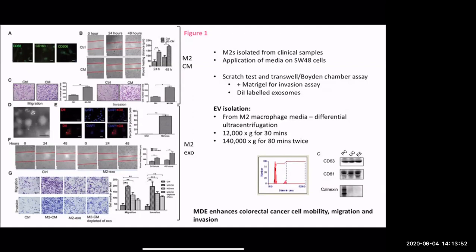Their first conclusion was that macrophage-derived exosomes enhanced colorectal cancer cell mobility, migration, and invasion. For me, something extra I'd want to see is staining the actin on the cell cytoskeleton to see if there's actually a change making it more polarised toward a metastatic phenotype. That's all for figure one - anyone can comment.